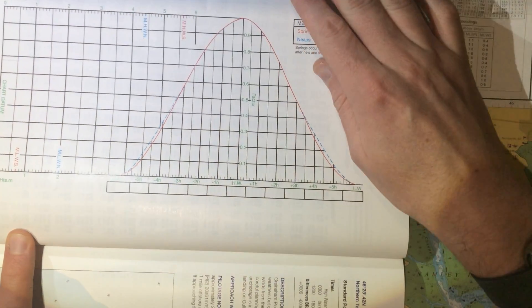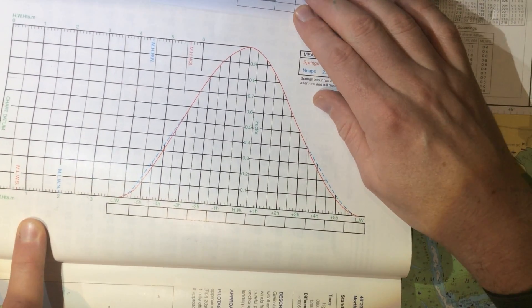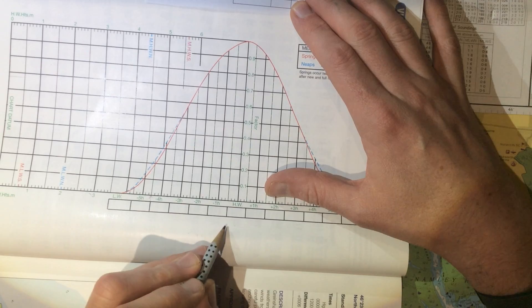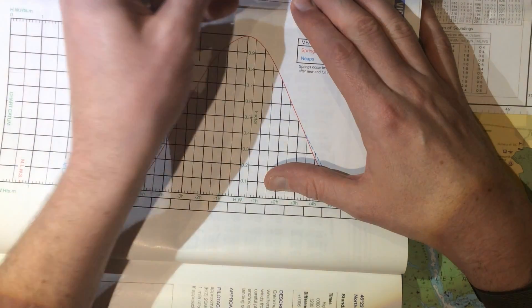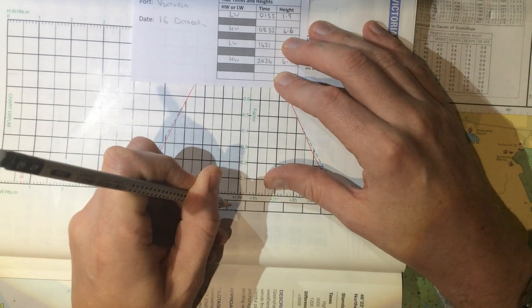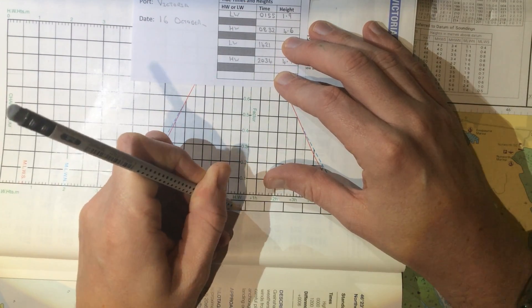So the first thing we do, looking at our curve for Victoria, is we start marking up the times at the bottom here. You can see that this is high water, so the high water time was 8:34. So we write 8:34 in this space here.